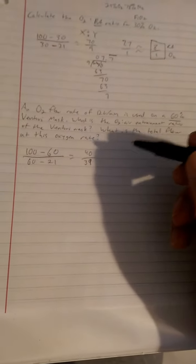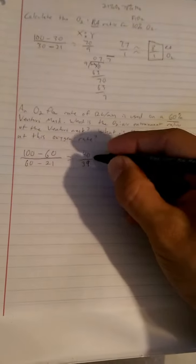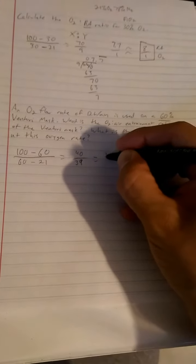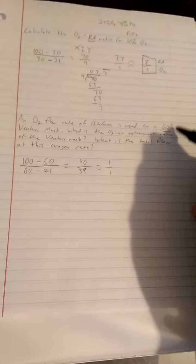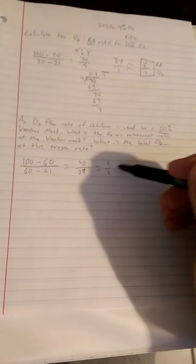What is 100 minus 60? It's 40. What is 60 minus 21? Well, that's 39. If we divide this out, we're not going to get 1, but you'll realize how close that is to a 1 to 1 ratio. Well, guess what? 60% oxygen, 60 FiO2, is always a 1 to 1 room air to oxygen ratio.